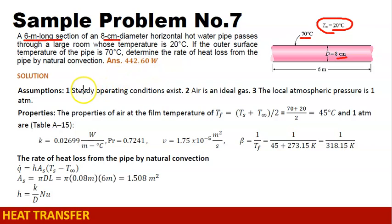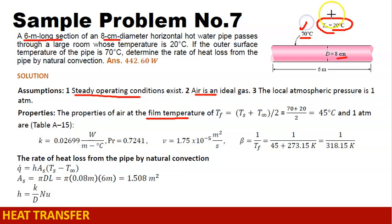We are operating under steady state conditions. We consider air as an ideal gas, and the local atmospheric pressure is 1 atm. We will evaluate the properties at the film temperature, which is the sum of the surface temperature and the fluid temperature divided by 2. So our film temperature is 45 degrees Celsius.